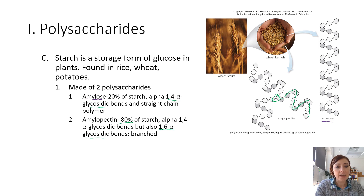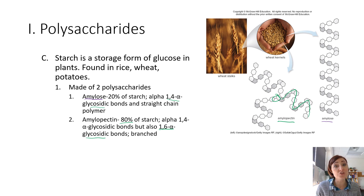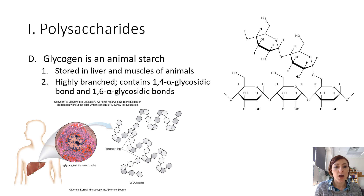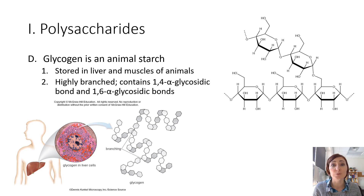Glycogen has the exact same glycosidic linkages as amylopectin. Unless you were told structurally, you could not tell the difference between these two. Glycogen is an animal starch — a storage form of glucose. We store glycogen in our liver and muscles. Without being told one was from a plant and one from an animal, it would be really tough to tell them apart.